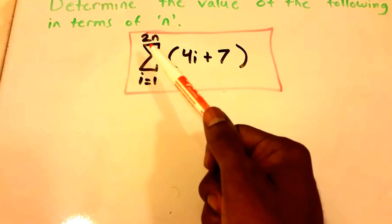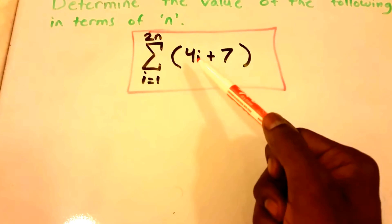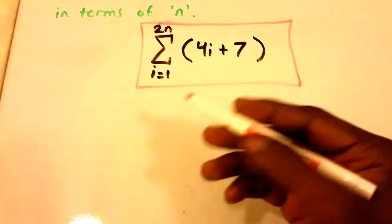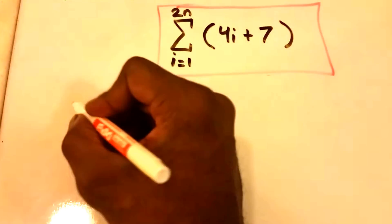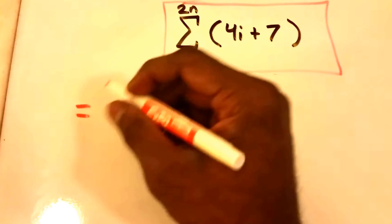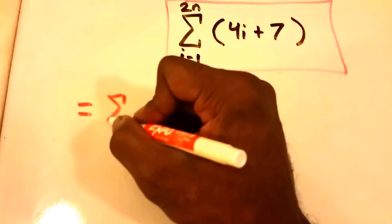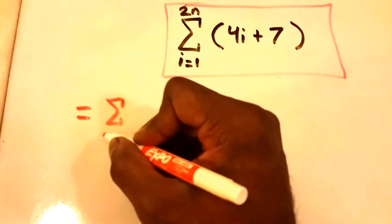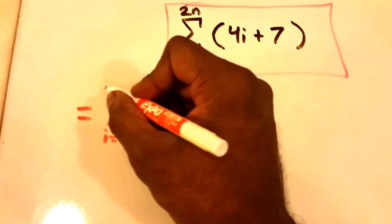So first thing I'm going to do is I'm going to rewrite the equation. So we have the summation from i equals 1 all the way to 2 times n of 4 times i plus 7.